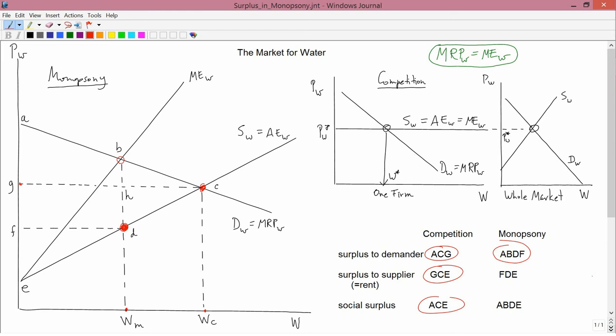The competitive firm, by contrast, thinks that the supply curve is horizontal. It actually isn't, but that's what the competitive firm thinks. And so it doesn't have that hesitancy to buy water. So the monopsonist buys less water than the competitive firm.